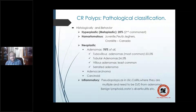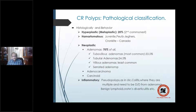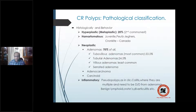The neoplastic group — the most sinister — includes adenomas, adenocarcinomas, and carcinoid. Among the 70% adenomas, you have tubulovillous, tubular, villous, and the newer serrated adenoma classification. Inflammatory polyps are not really polyps but pseudopolyps, where edematous mucosa along with an ulcer appears as a polyp, commonly seen in ulcerative colitis, needing differentiation from adenomas.